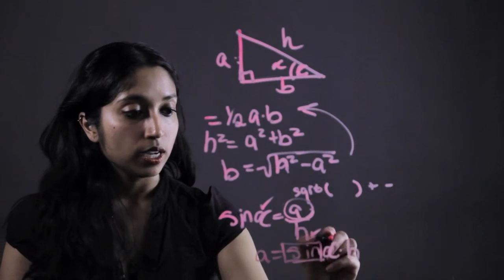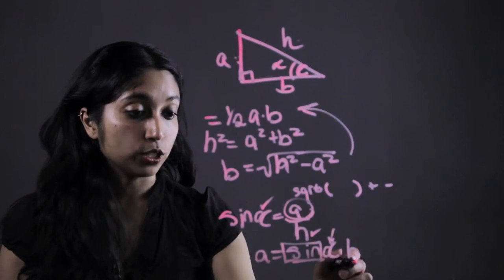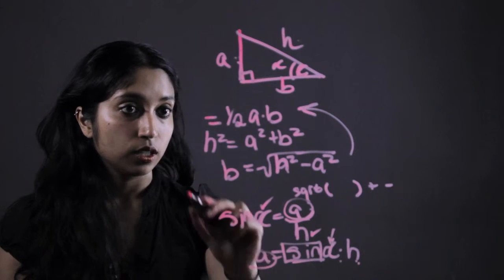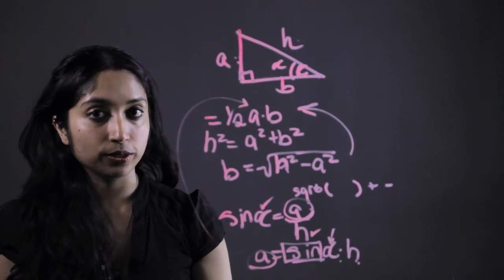So you would just press the sine button, enter in the value they gave you for alpha, multiply that by h which we're given and then we have a. Plug that back into that original area equation and you have the area of your right angle triangle.